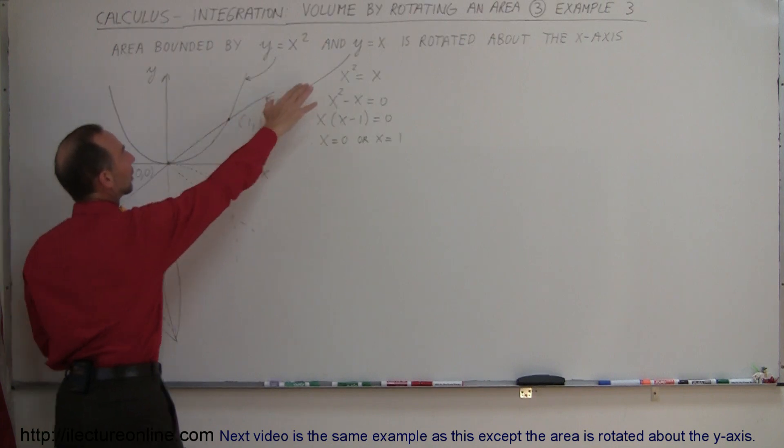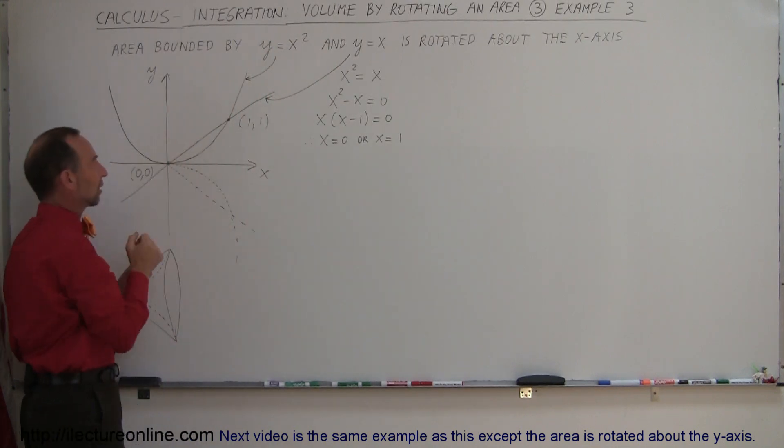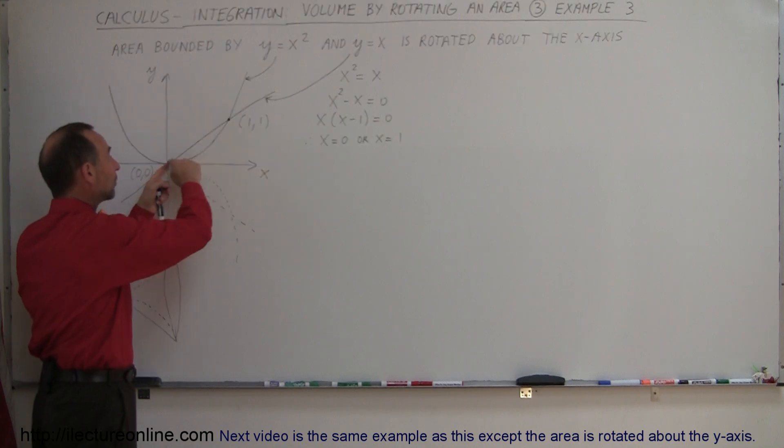So here we have a straight line y equals x, a parabola y equals x squared, and they intersect in two places and bound an area.